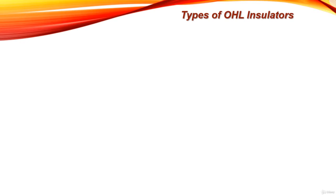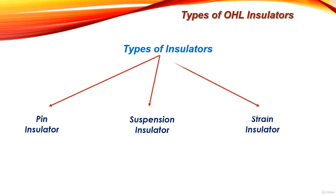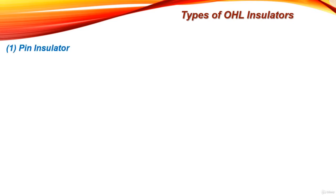Hello everyone. In this tutorial you will understand the types of overhead line insulators that can be used for overhead transmission lines. There are several types of insulators, but the most commonly used are pin type insulator, suspension type insulator, and strain insulator. Each type of insulator will be explained in turn.